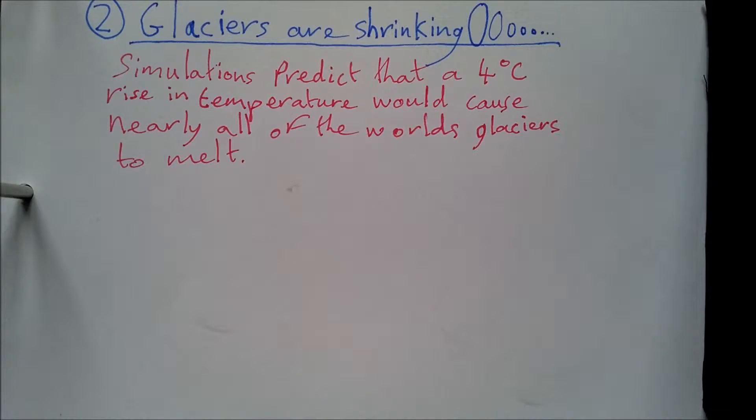Number 2: Glaciers are shrinking. Simulations predict that a 4-degree rise in temperature would cause nearly all of the world's glaciers to melt.